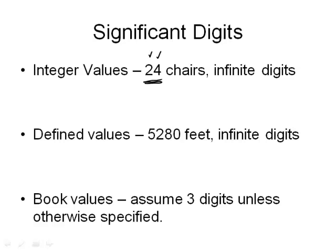The same thing holds true with defined values. For example, there are 5,280 feet in a mile. So later on when we're doing unit conversions, 5,280 feet is an exact value. So when I use it in a calculation, I don't consider that to be three digits, because remember trailing zeros are not significant. This is not three digits. This is an infinite number of digits.